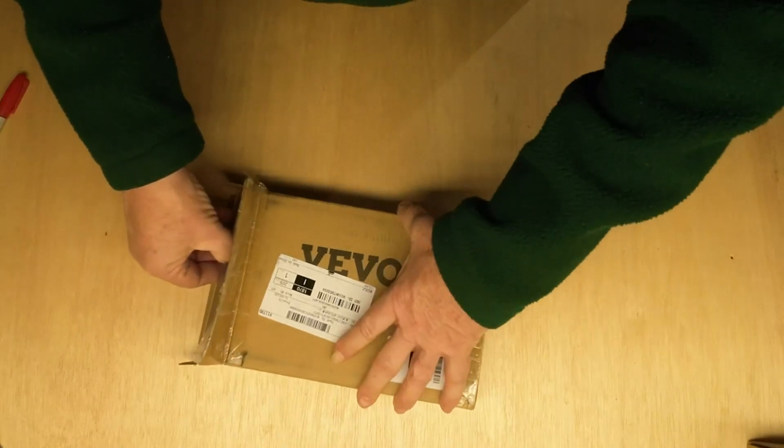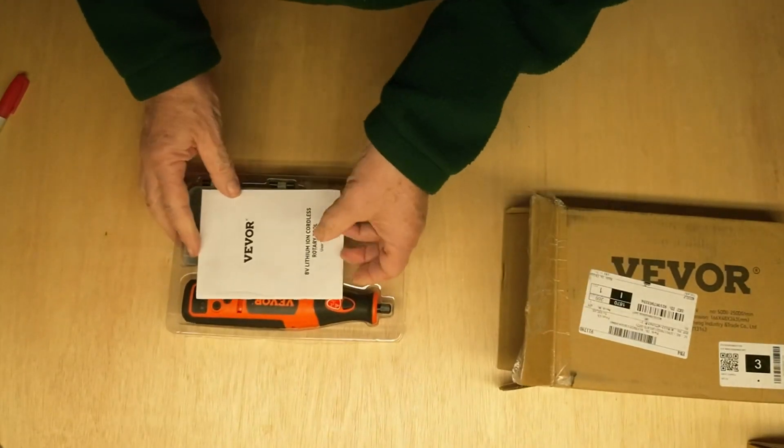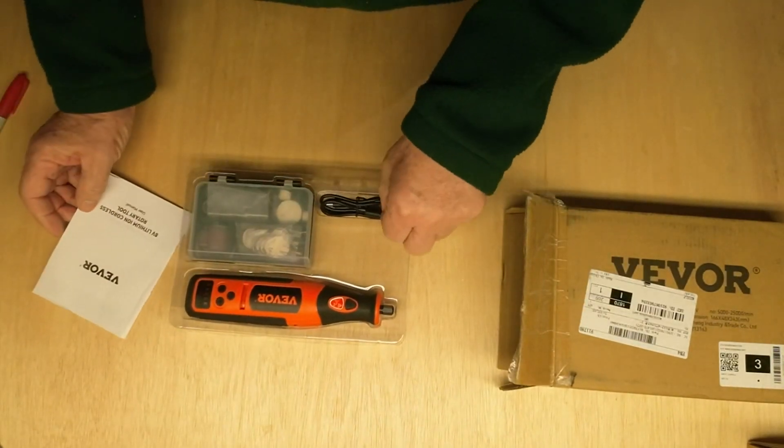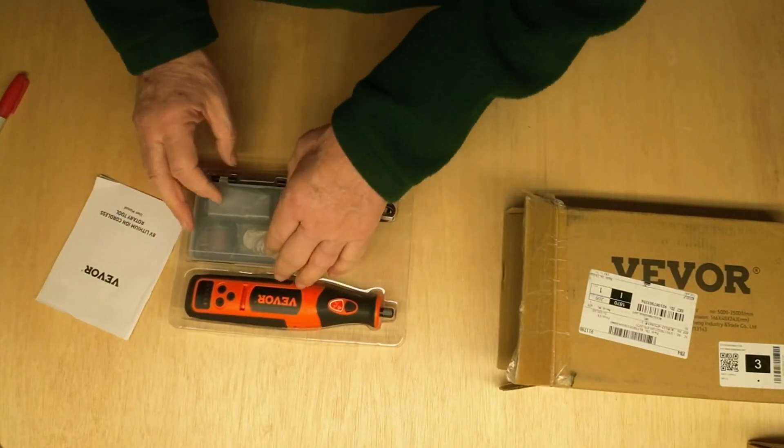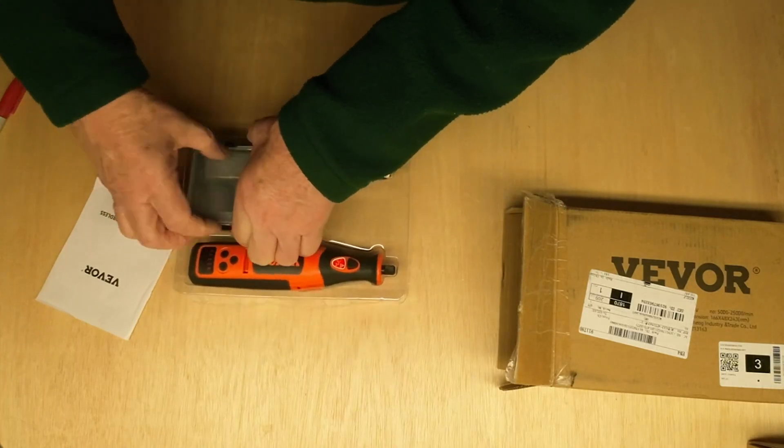This is the Vivore Rotary Tool, rechargeable with charging cable. It comes with a nice selection of accessories to use with it in this little case here.